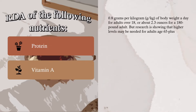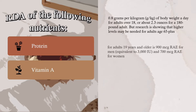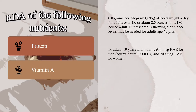Vitamin A: For adults 19 years and older, the RDA is 900 micrograms retinol activity equivalence for men, equivalent to 3,000 international units, and 700 micrograms retinol activity equivalence for women.